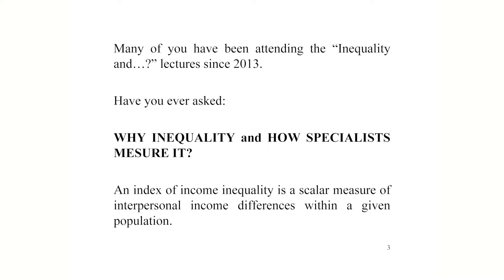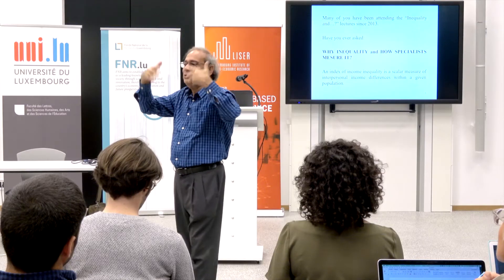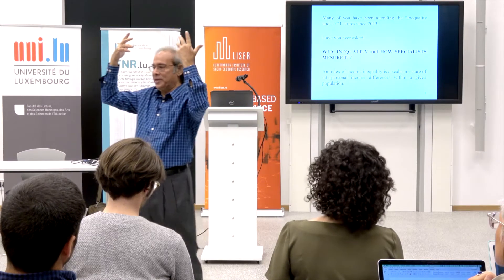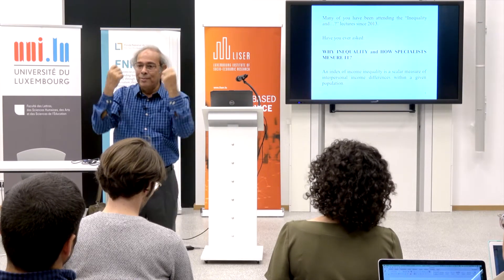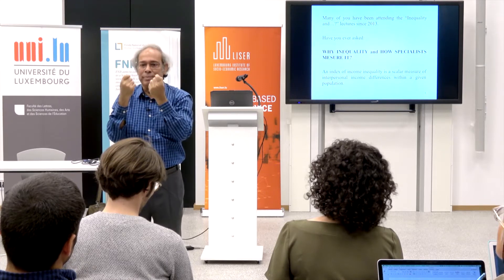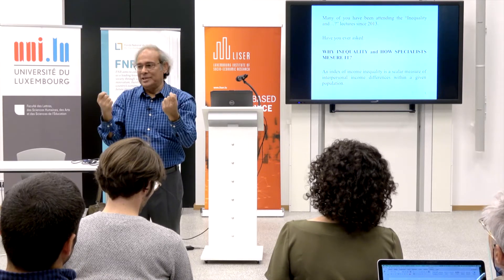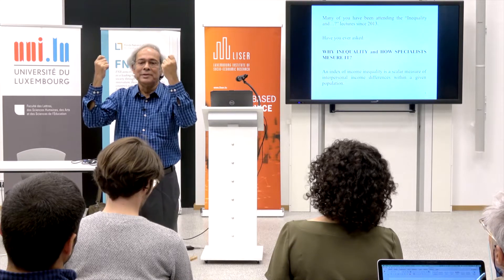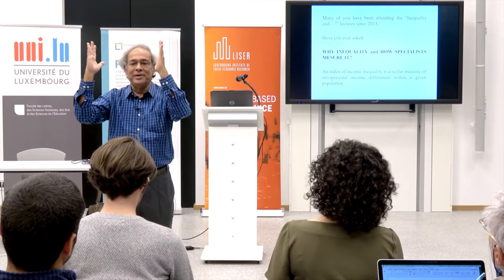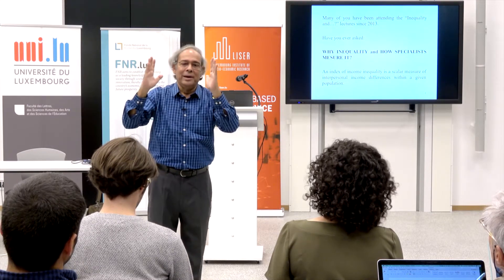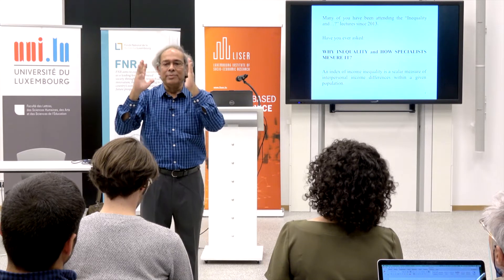Aggregation cannot be done in an arbitrary manner. There are thousands of ways of doing these aggregations — this is known in the mathematics literature as aggregation. There must be some guiding principle that will tell us how to aggregate such differences. This is what an inequality measure does.